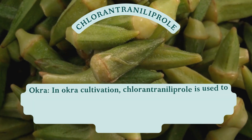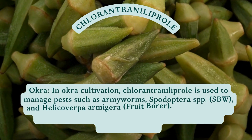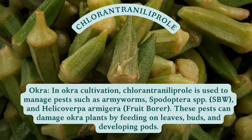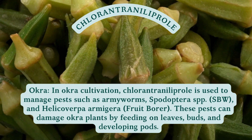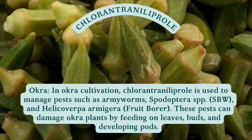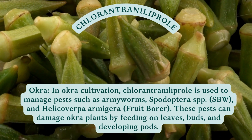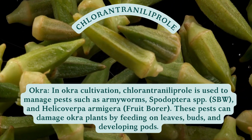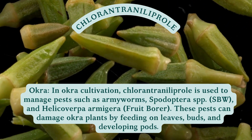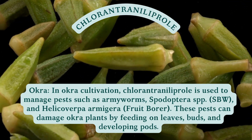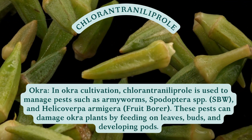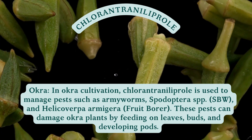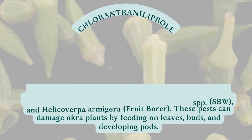Okra: In okra cultivation, chlorantraniliprole is used to manage pests such as armyworms (Spodoptera spp.) and Helicoverpa armigera fruit borer. These pests can damage okra plants by feeding on leaves, buds, and developing pods.